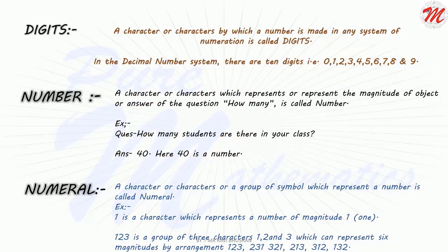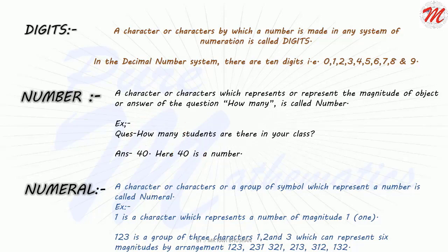What is a number? A character or characters which represent the magnitude of an object, or answer the question 'how many,' is called a number. Just for example, when a student is asked how many students are there in your class, he answers 40. 40 is the number because it is the answer to the question 'how many.'